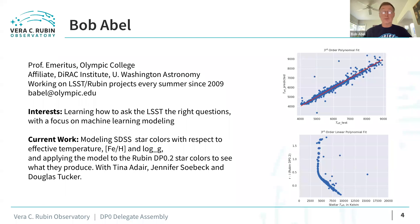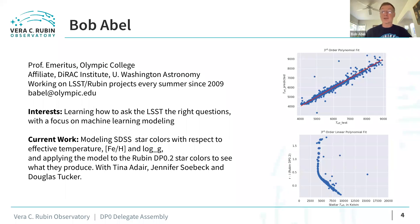I've been working with Tina Adair, Douglas Tucker, and Jennifer Sobeck on modeling — trying to identify stars by their colors. I pulled 5,000 stars from the Sloan Digital Sky Survey and took their colors, did several regression fits to see how well I could predict effective temperature, metallicity, and log g. Then I applied that model to the DP0.2 dataset to see what kind of effective temperatures it would produce. Mostly I want to say I really appreciate the collaborative nature of this project — you guys are so supportive and I really appreciate it.